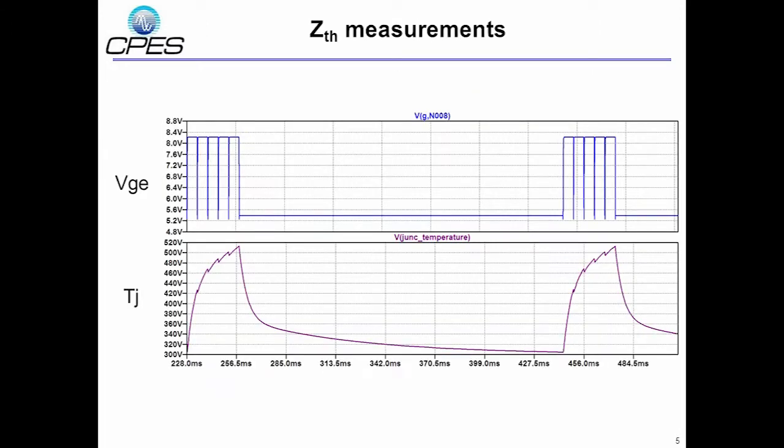Now, here we see the junction temperature and the gate emitter voltage. As the heating begins, we capture the first heating pulse using a data acquisition system and we use this pulse to measure or calculate the ZTH of the die attached layer of the module.